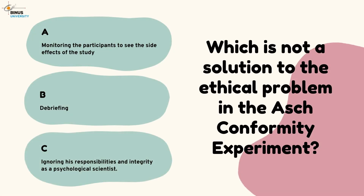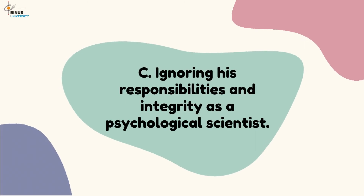The fourth question: which is not a solution to the ethical problem in the Asch Conformity Experiment? A. Monitoring the participants to see the side effects of the study. B. Debriefing. C. Ignoring responsibilities and integrity as a psychological scientist. The correct answer is C: ignoring responsibilities and integrity as a psychological scientist.